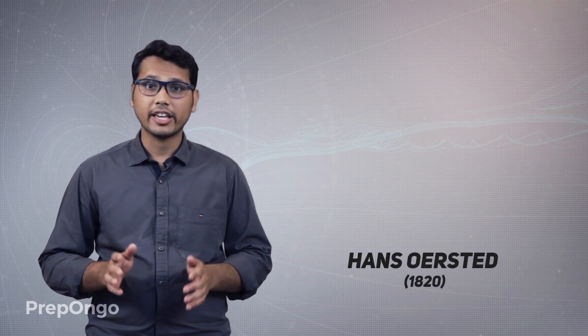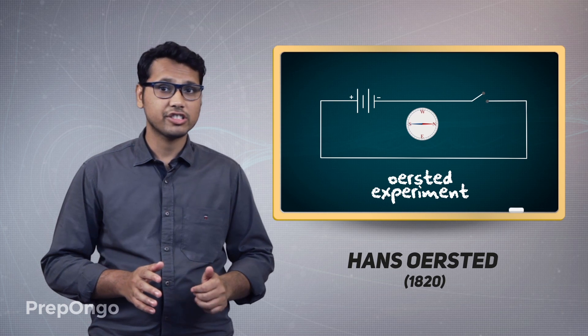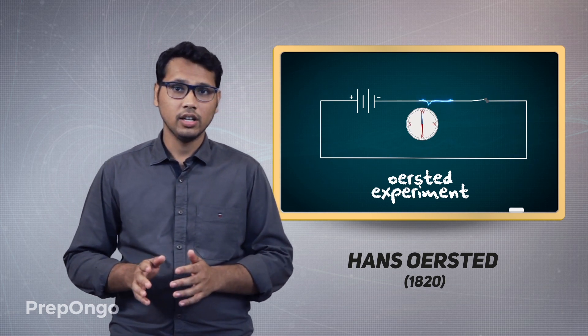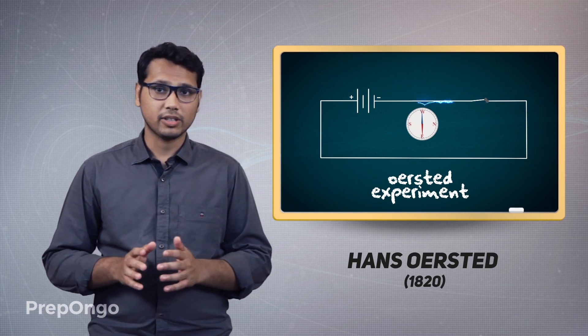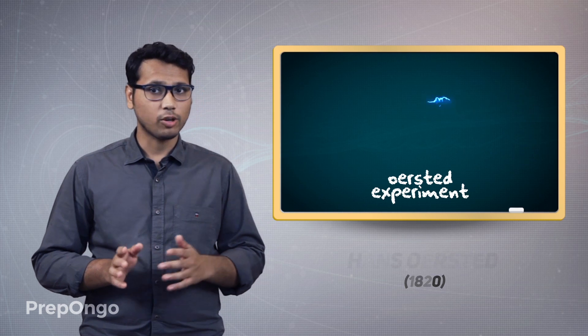Hello everyone. In 1820, while Hans Oersted was taking a class, he accidentally found out that when he switched on the battery and current started flowing in the conductor, the magnetic needle kept near the conductor deflected. After this observation, he was very much amazed and he thought that there must be a relation between the electric current and the magnetic field.